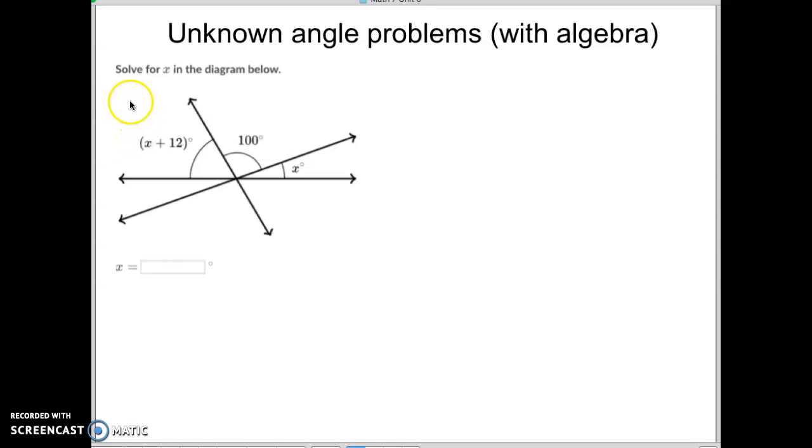You learned on our last one how to take this and make an equation out of it where you had to select the equation. This is supplementary because it fits along that straight line. So we need to take x plus 12 plus 100 plus x and set that equal to 180.